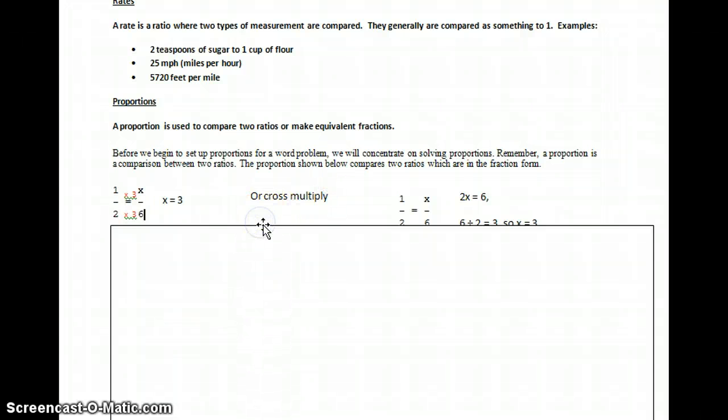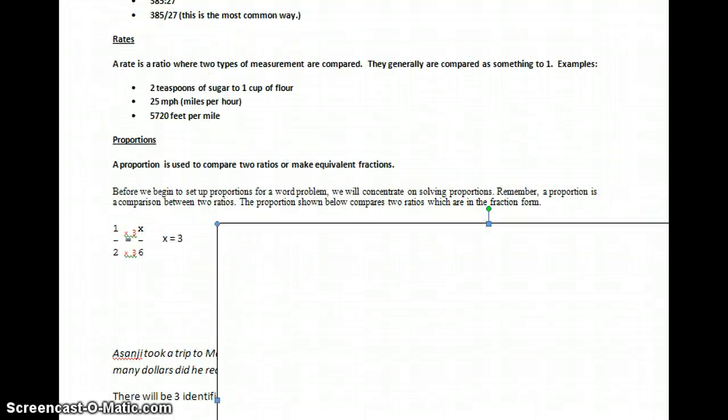So if I were to ask you to solve this problem, one half equals x over 6, you might be able to look at that pretty easily and solve it. But the process would be, just like equivalent fractions, 2 times 3 equals 6, so 1 times 3 gives me my x, or x equals 3.